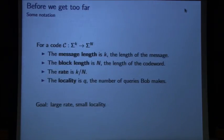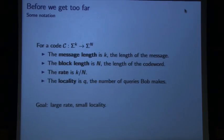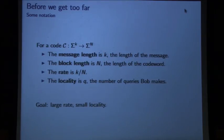The terminology: x will always be the message, capital N will be the length of a code word, and we'll talk a lot about the rate — k over n — the number of message symbols divided by the number of code word symbols. We're hoping to get the rate approaching 1 and the locality as small as possible. This is the tradeoff: we want the rate to be as high as possible and the locality to be as small as possible.